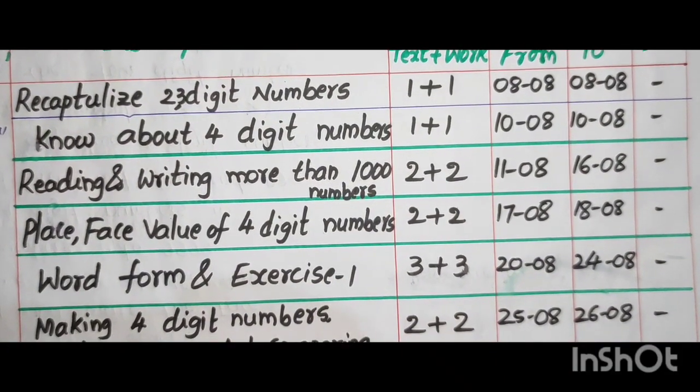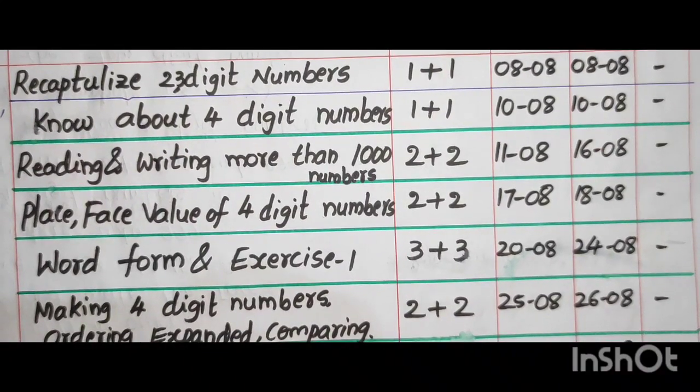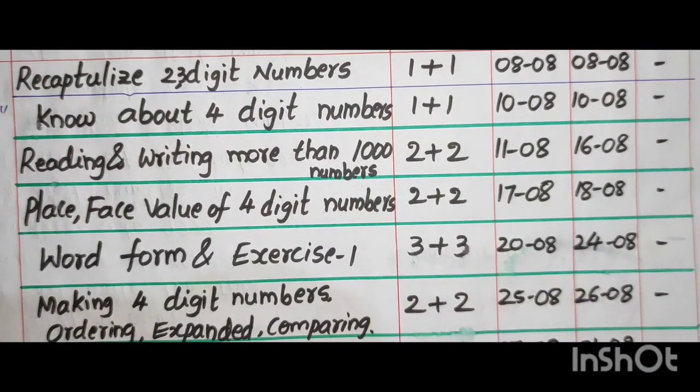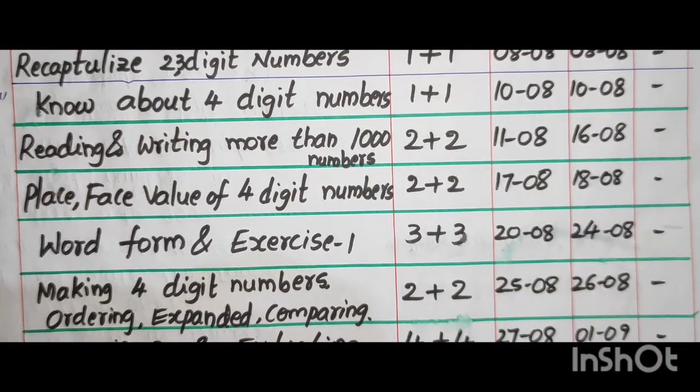Reading and writing more than 1000 numbers, 2 plus 2, August 11 to August 16. Place face value of 4 digit numbers, 2 plus 2, August 17 to August 18. Word form and exercise 1, 3 plus 3, August 22 to August 24.